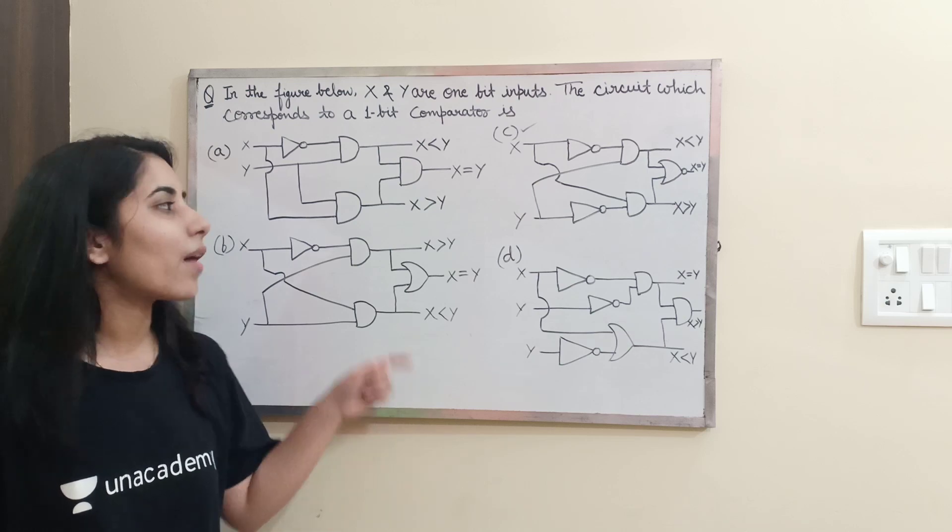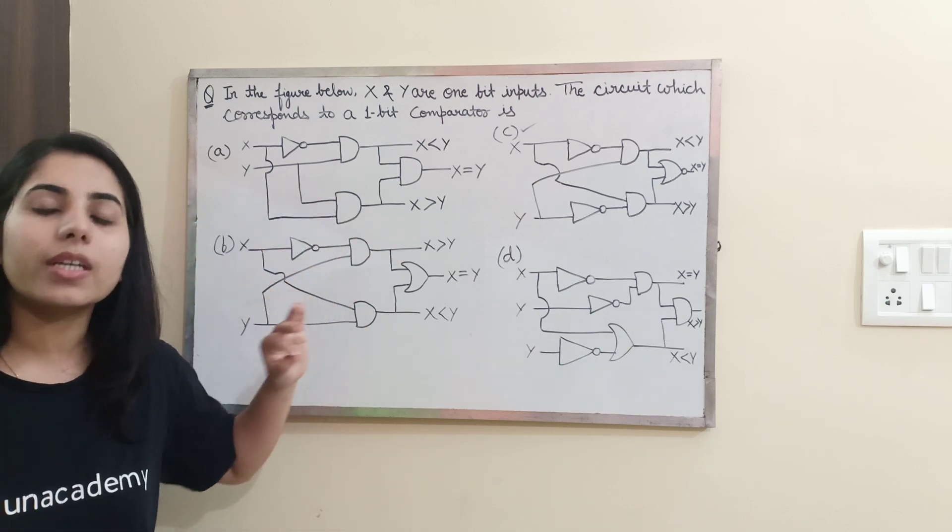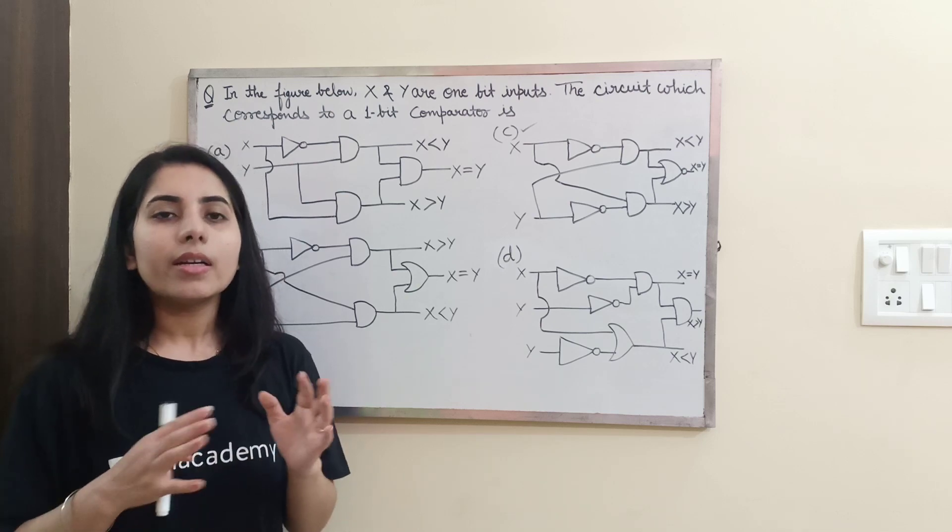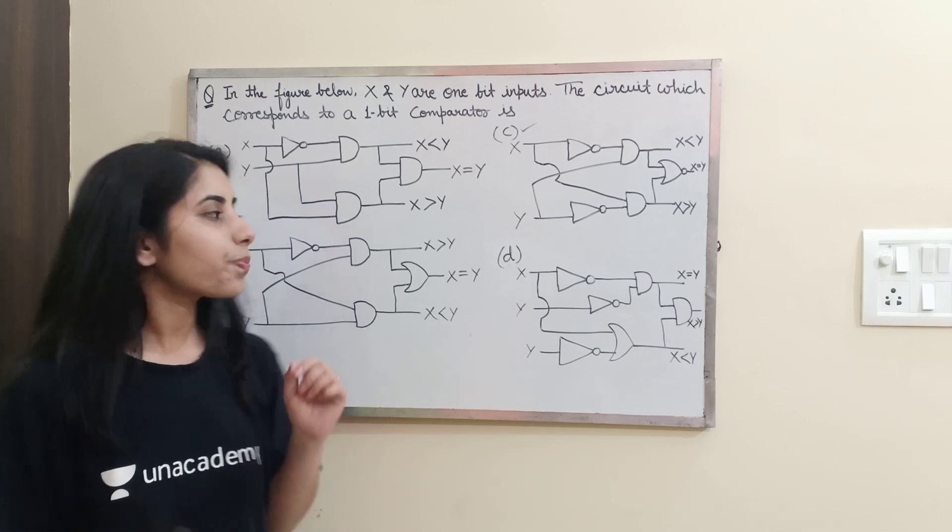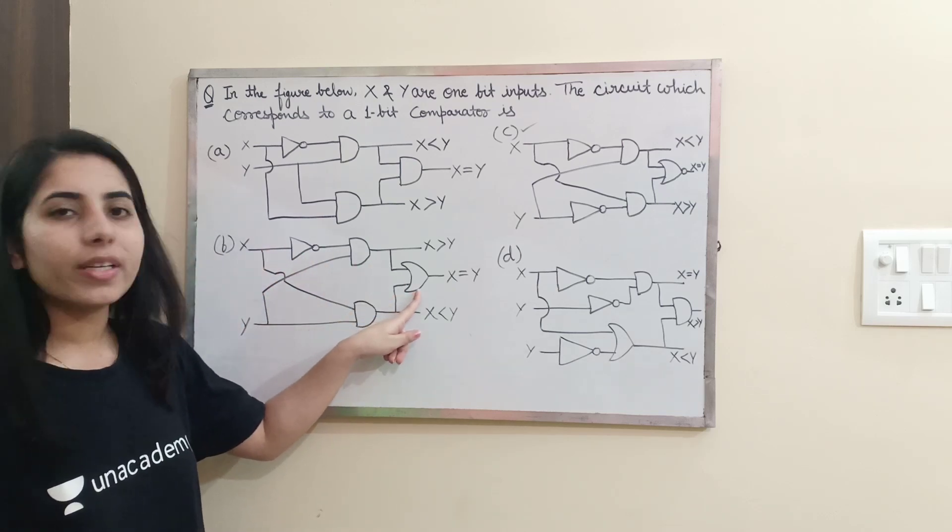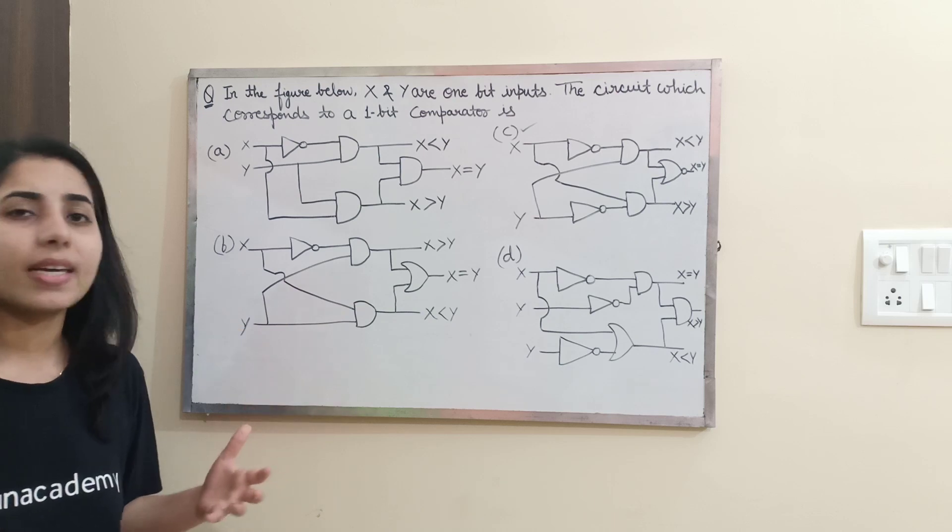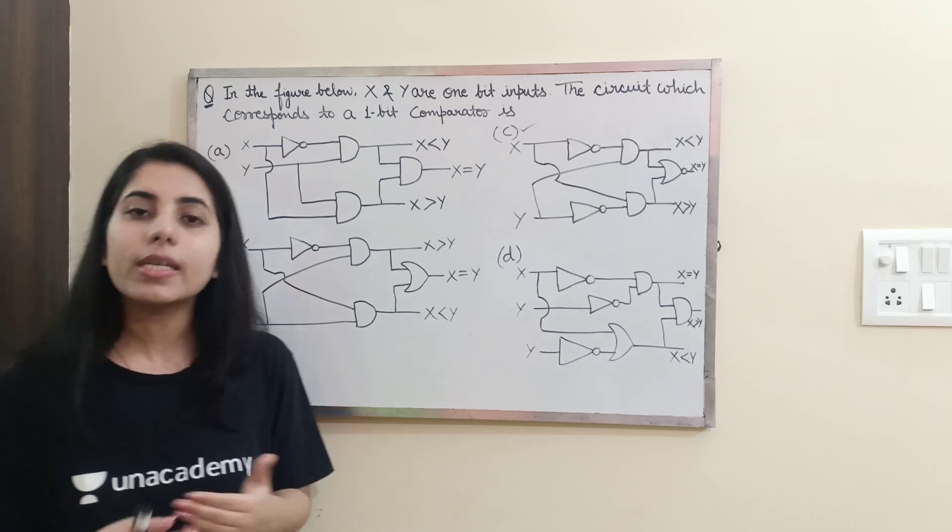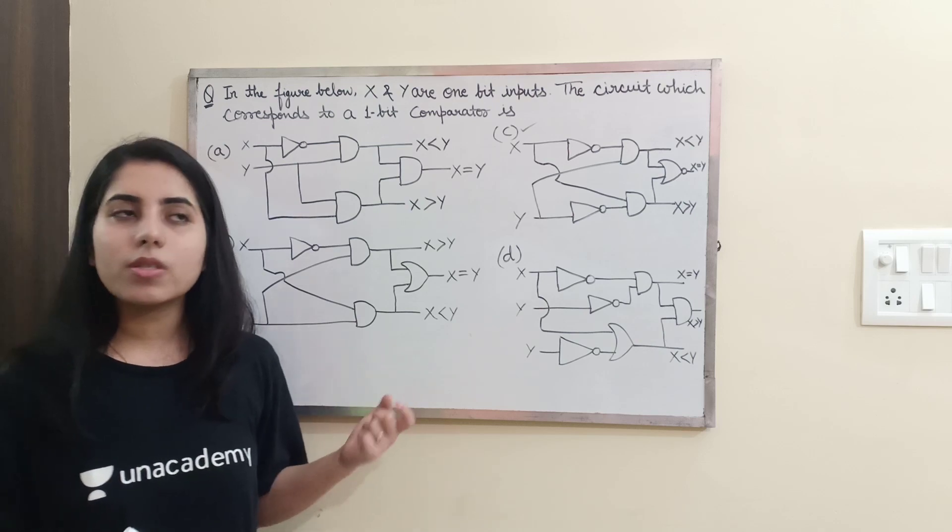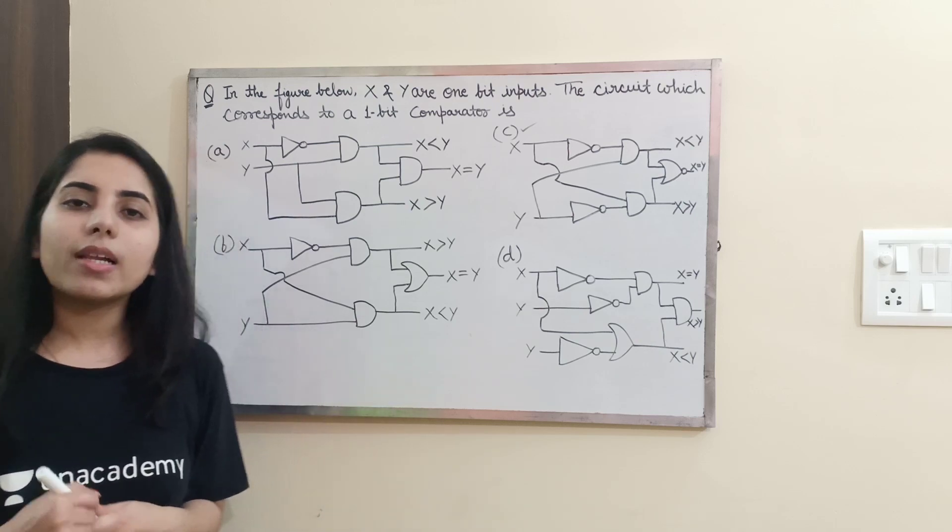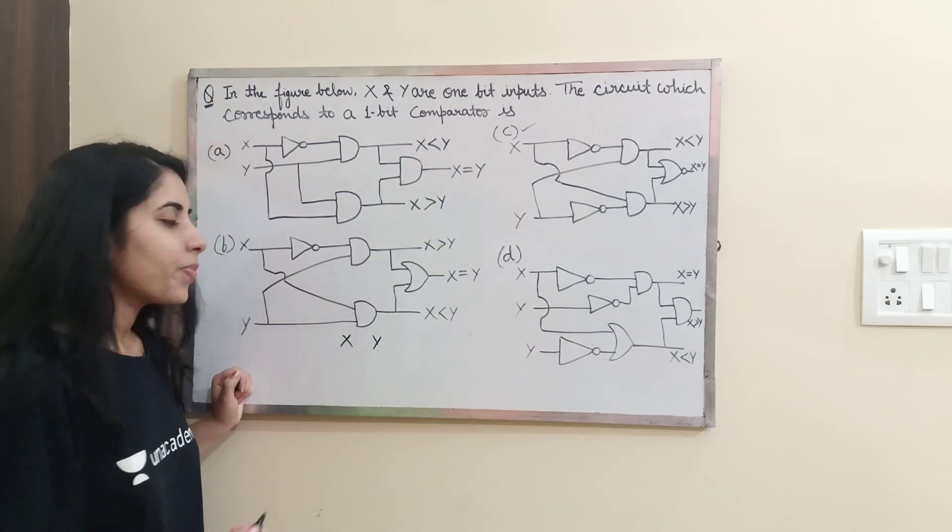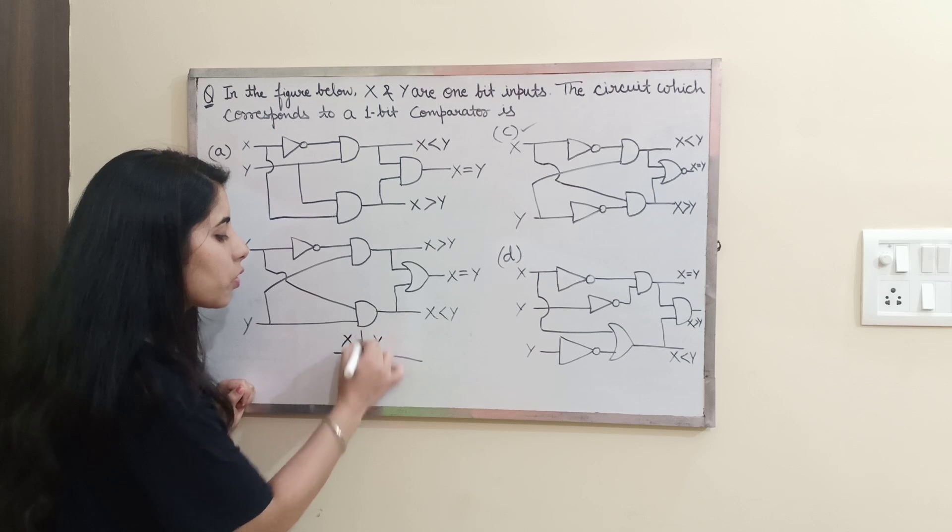To check this thing we have to check each and every circuit given in the option. If we are not directly familiar with the type of circuit we can get for comparator by using NOT, AND, and OR gate, if we are not exactly familiar with that kind of circuit, we have to check each and every option. Now the point is when we are checking the options how we will check them. So basically you need to consider 2 inputs as X and Y and what are the possible inputs you can get?